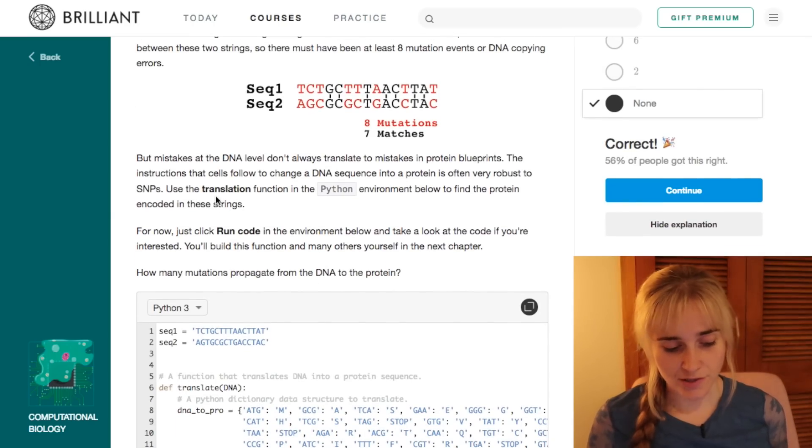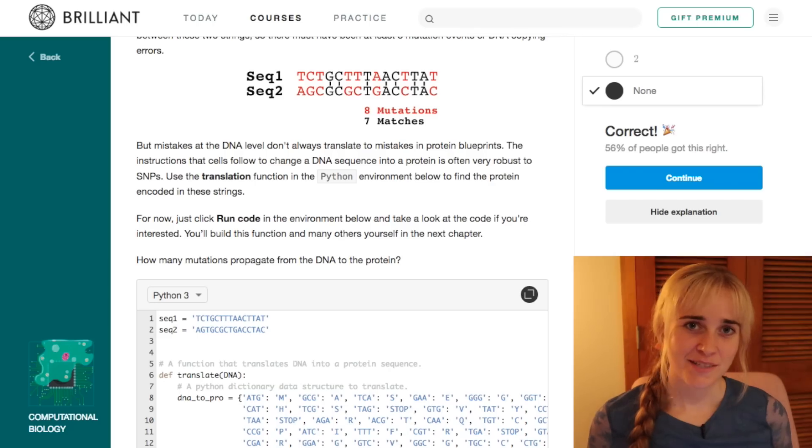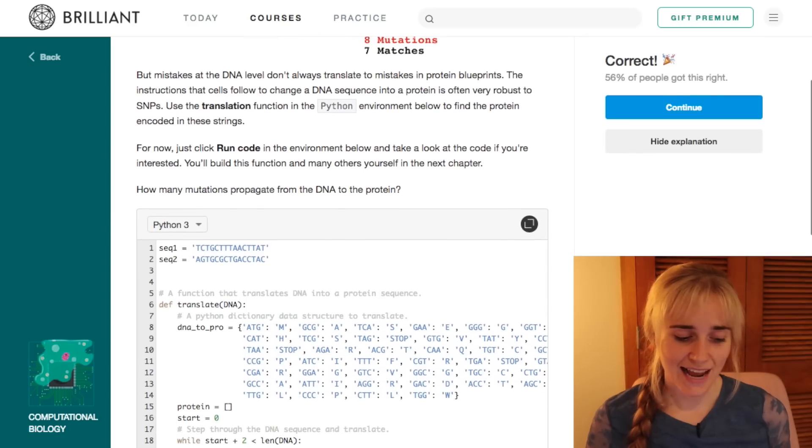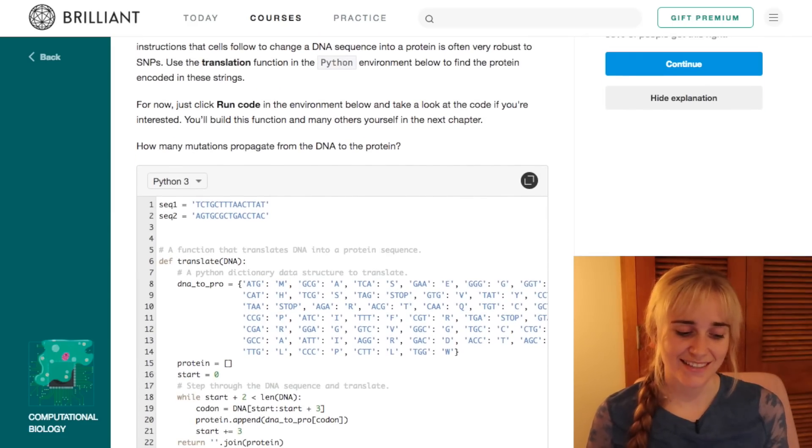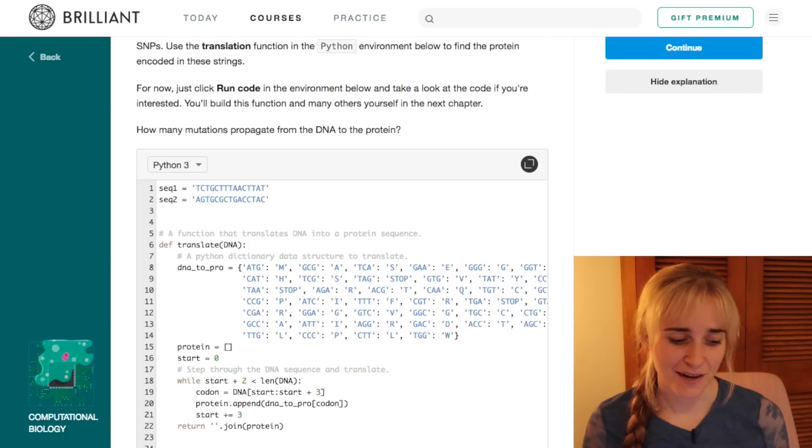So we can even use the translation function in Python below to find the protein encoded by these two strings of DNA. Throughout this computational biology course, you can learn how to build your own functions in Python, which is a coding language and very useful for science. But we're going to just look at how useful having something like this, a coding language, can be to understanding some of these biological ideas.